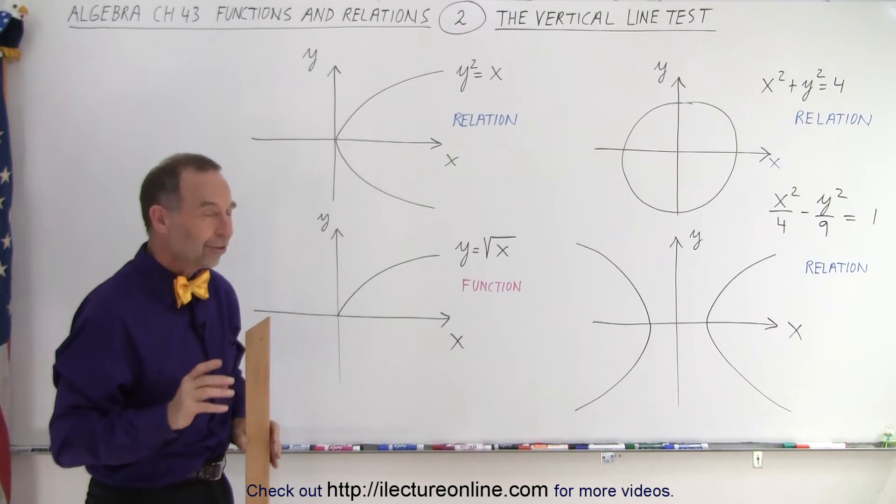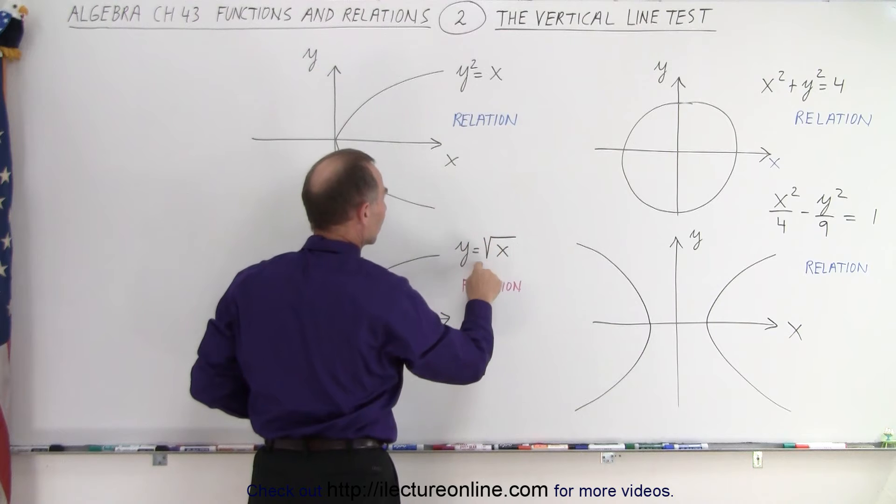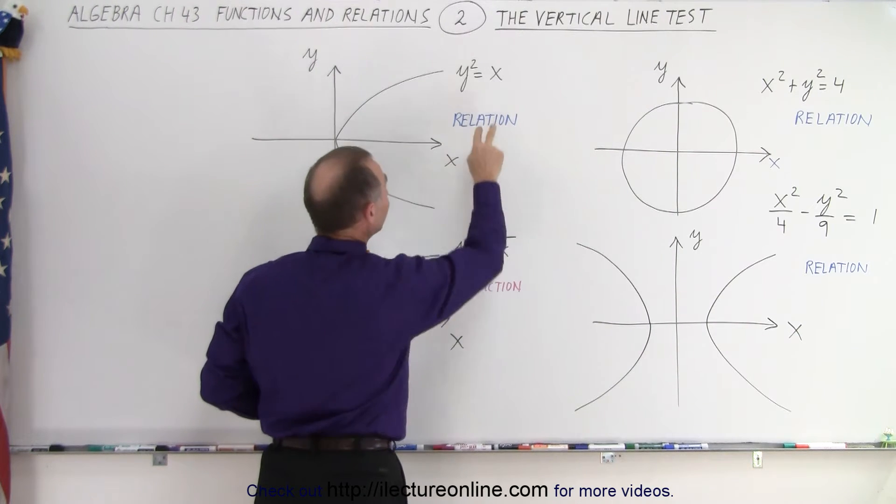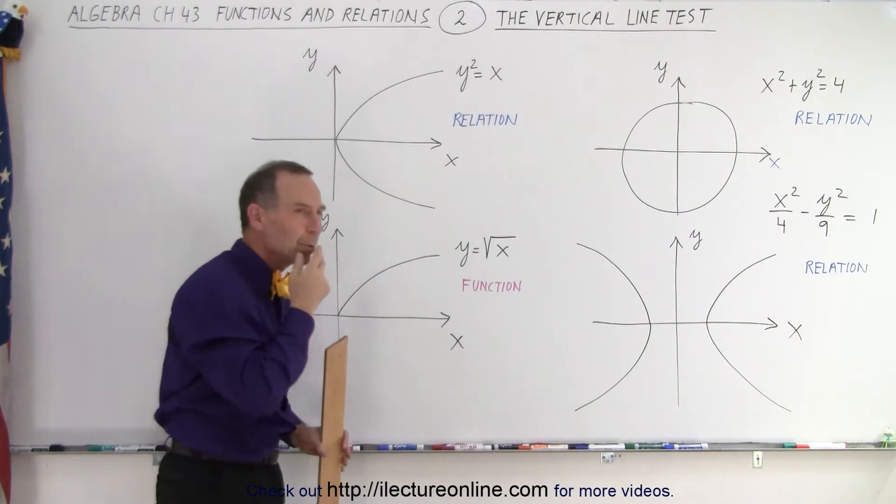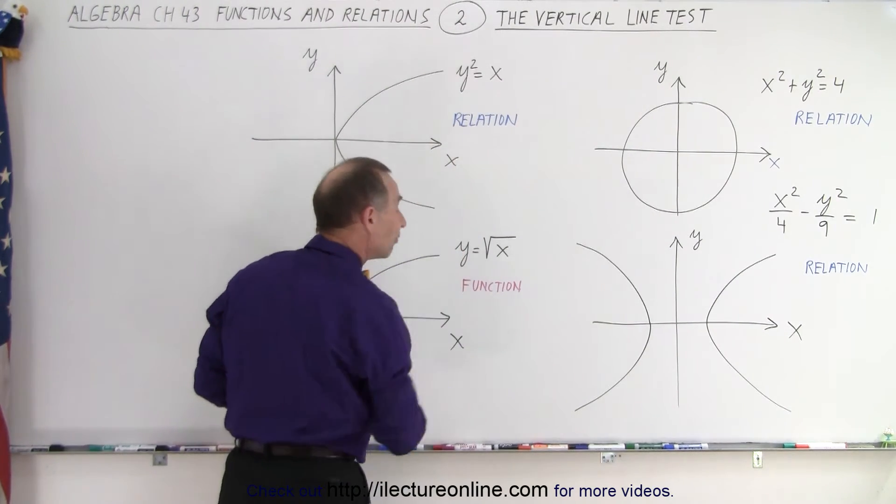Now, here's an interesting difference. Notice this here and this over here. If we square this equation, we end up with this exactly. Wow! But here we have a relation, and here I claim we have a function. Notice that the bottom part of that curve is missing.